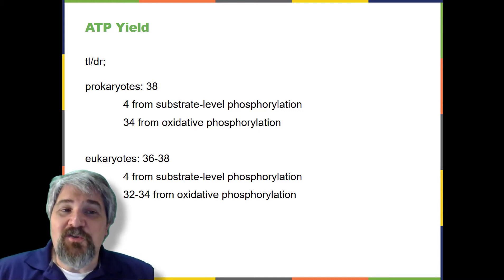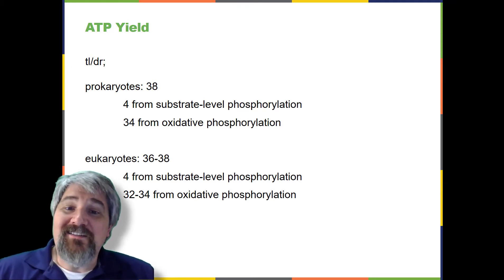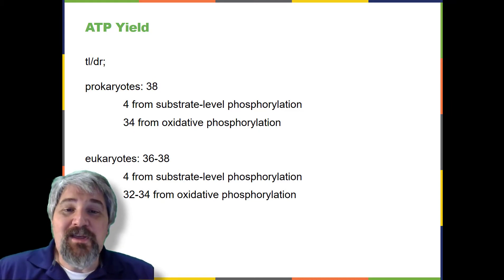The NADH generated from glycolysis cannot easily enter mitochondria. Thus, electrons are picked up on the inside of the mitochondria by either NAD plus or FAD plus. Fewer ATP molecules are generated when FAD plus acts as a carrier. NAD plus is used as the electron transporter in the liver and FAD plus in the brain, so the ATP yield depends on the tissue being considered.